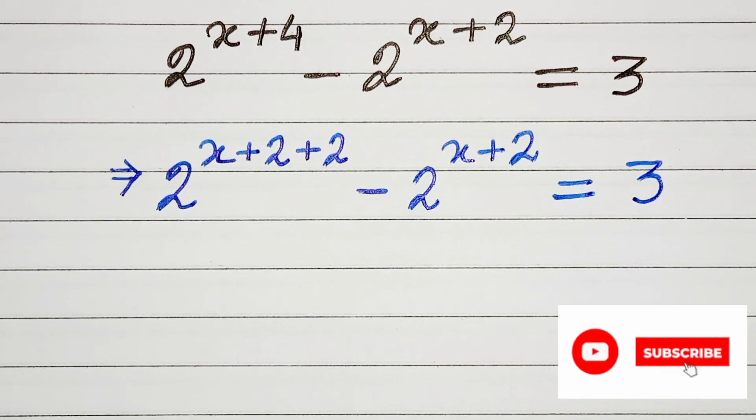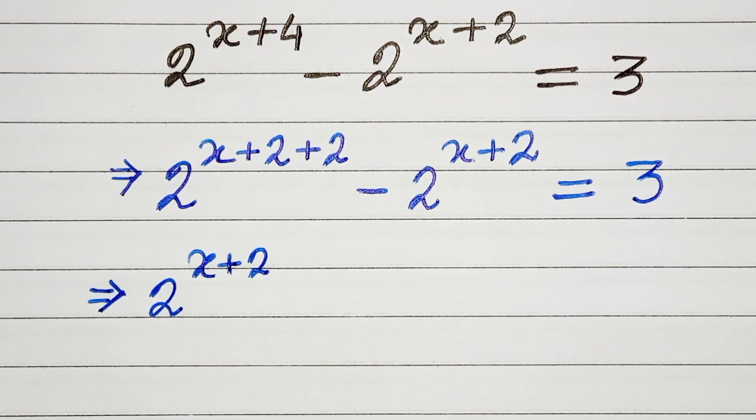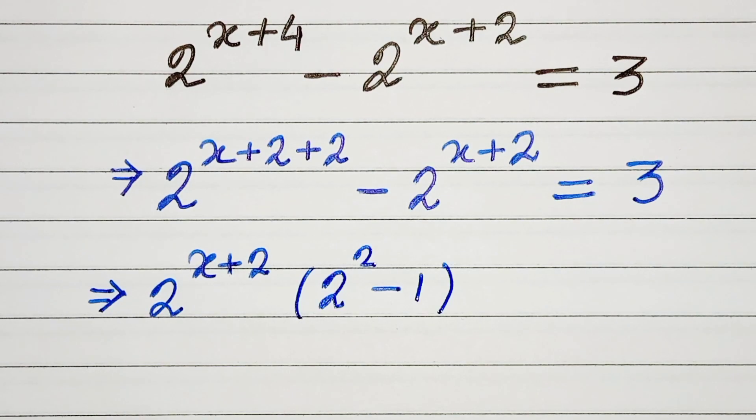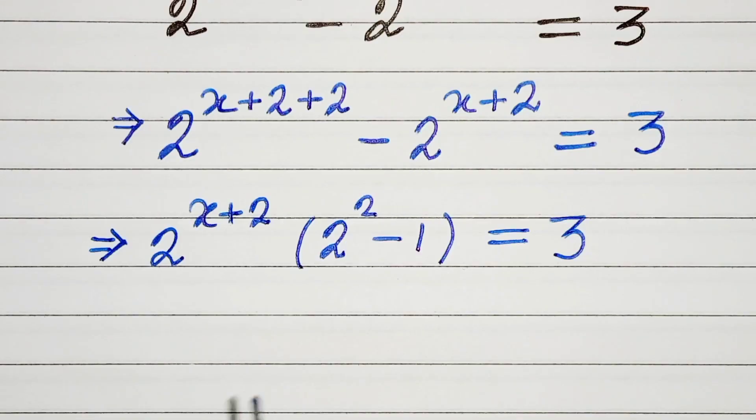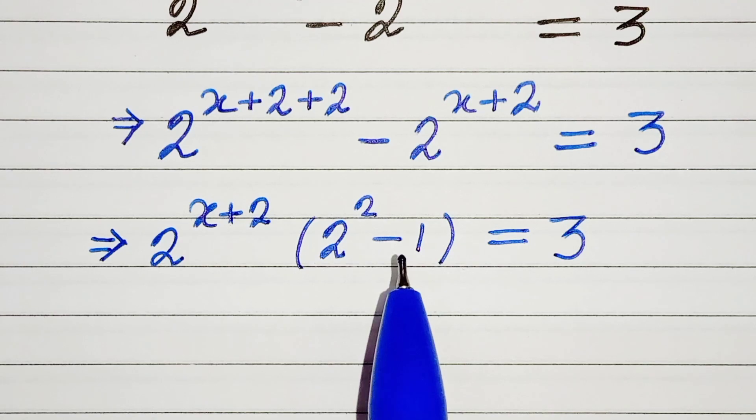In the next step we can take common 2 raised to the power x plus 2. And we will be left with 2 squared minus 1 equals 3. Now 2 squared minus 1 is 4 minus 1, that is 3.